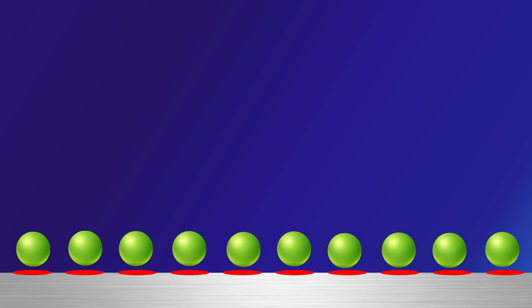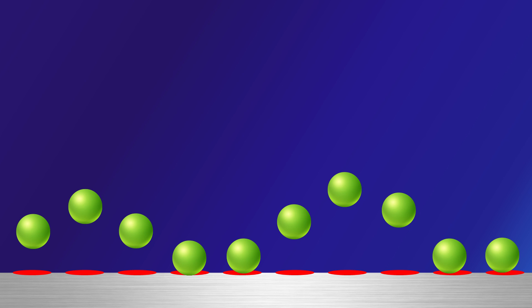The bismuth layer then buckles, producing a wavy pattern where some atoms are raised, forming stripes, each stripe being about five bismuth atoms wide.